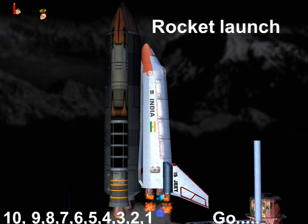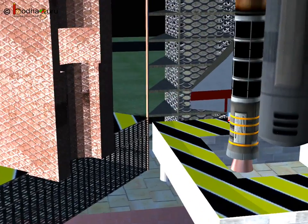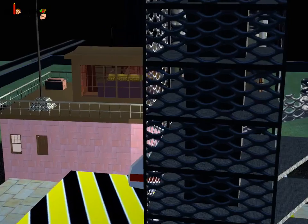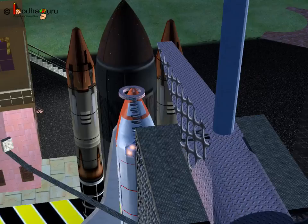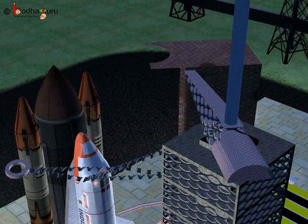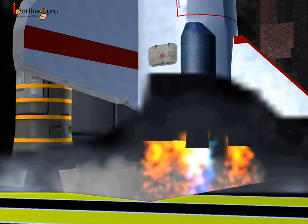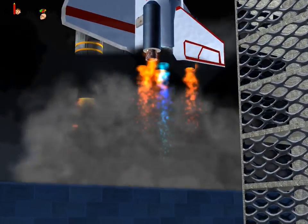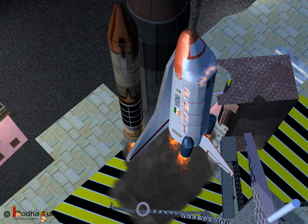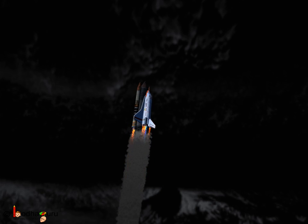You know how rocket goes into the space? It also uses backward counting. And we call it a countdown. A rocket is being launched. The countdown begins. 10, 9, 8, 7, 6, 5, 4, 3, 2, 1. Yay! The rocket is in the space now.